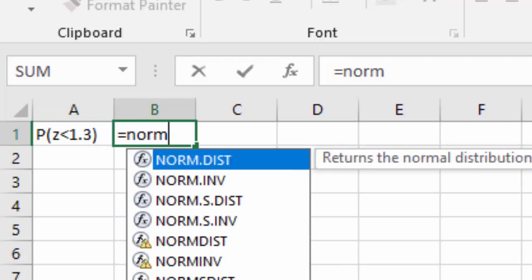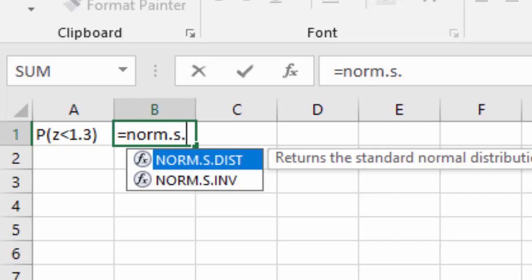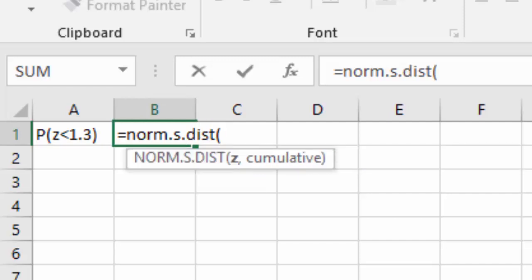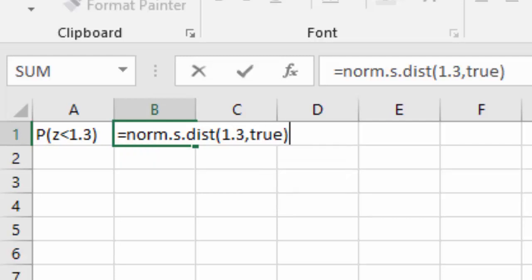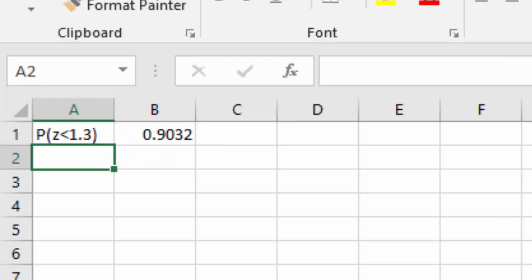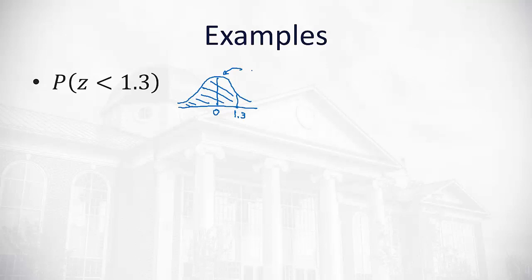We want the probability that z is less than 1.3. We'll type in equals norm.s, for standard, distribution. Type in the z value of 1.3. We'll always say true for our purposes. When we do, we get 0.9032. That means the area to the left is 0.9032, and that shaded area is the area we want, so that must be my probability that the z value is less than 1.3.